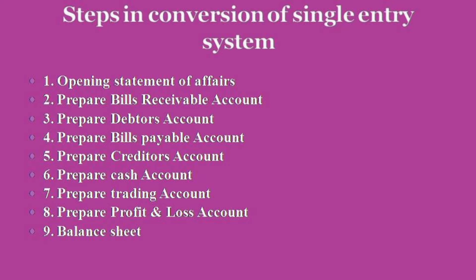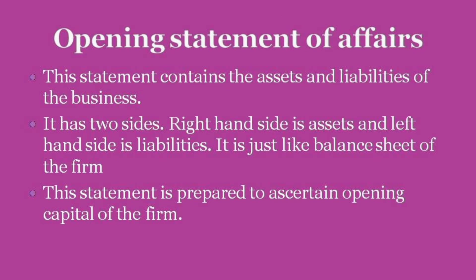Let us discuss each step one by one. First, preparation of opening statement of affairs. This statement contains the assets and liabilities of the business. It has two sides: right-hand side is assets and left-hand side is liabilities. It is just like a balance sheet of the firm. This statement is prepared to ascertain the opening capital of the firm.